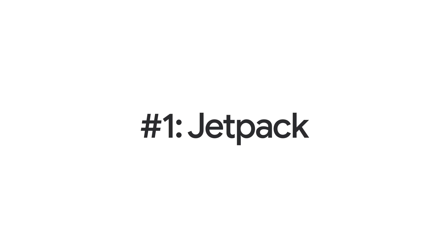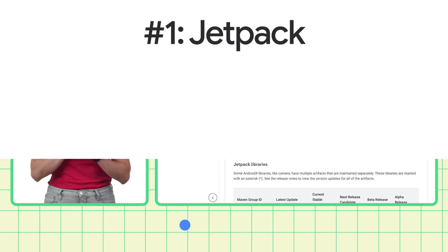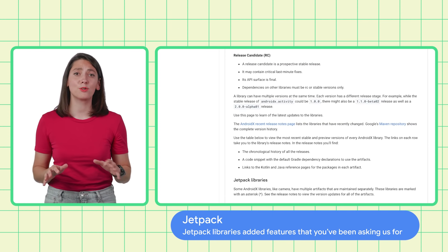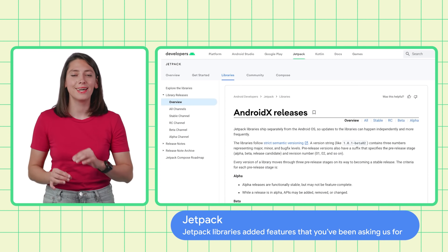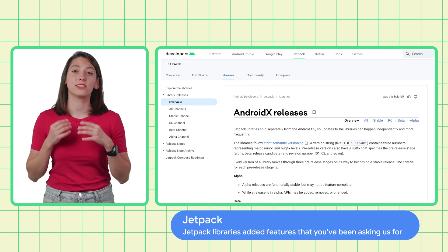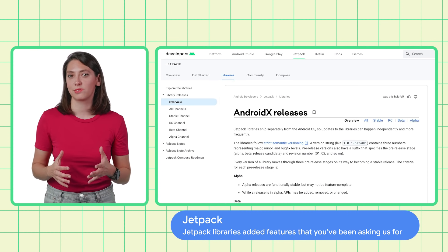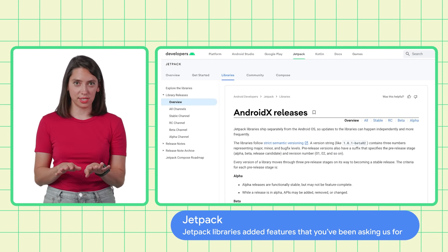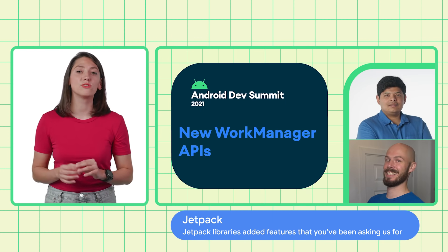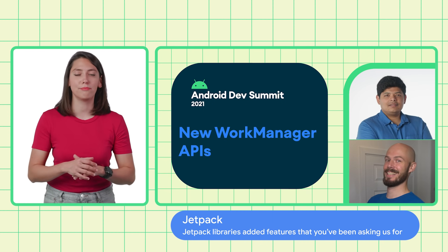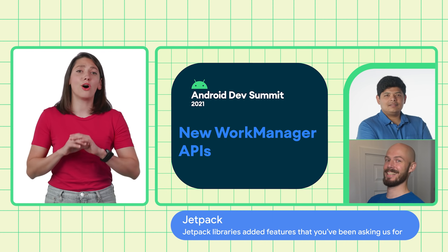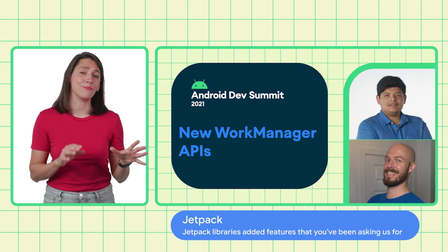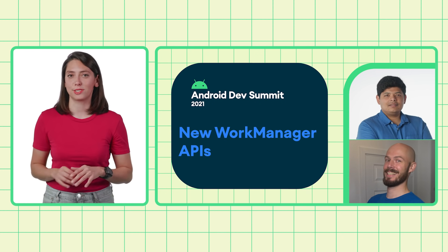First up, Jetpack. A lot of the Jetpack libraries like navigation, data store, room, and macro benchmarking added features that you've been asking for. But if you're up for a deep dive, check out WorkManager Back to the Foreground, where you'll learn all about the latest APIs and features.